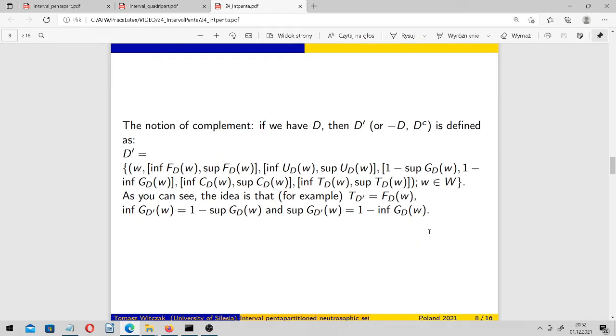If we have D, then its complement, well, we may use this symbol or all these symbols. Its complement is defined in the following manner. For example, its truth interval is the falsity interval of the initial set D. Falsity interval of D' is truth interval of D, and so on.